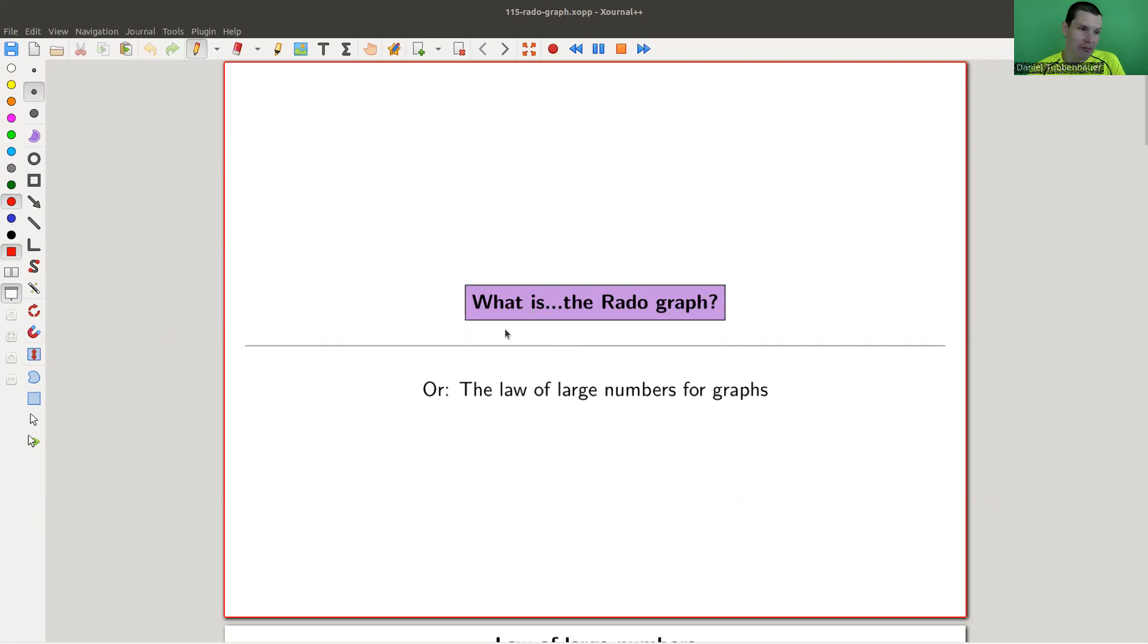So it's called the Rado graph, named after the mathematician Rado, and it's sometimes also called the random graph. So not a random graph, but the one and only random graph, and we'll see why. The way I would like to think about it is somehow it's like the law of large numbers in graph theory.